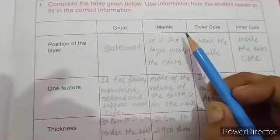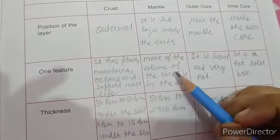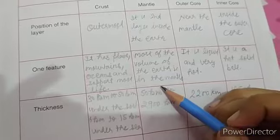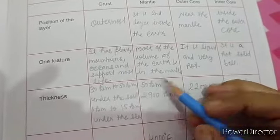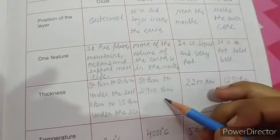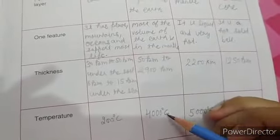Next layer is mantle. This is second layer. Most of the volume of the earth is in the mantle. 50 km to 2900 km. Temperature is 4000 degree Celsius.